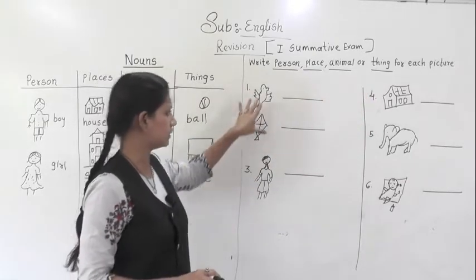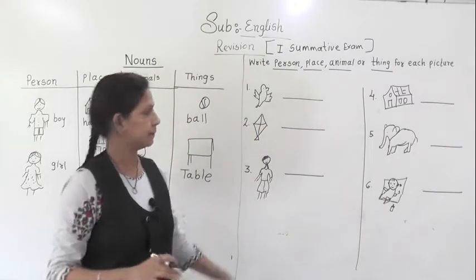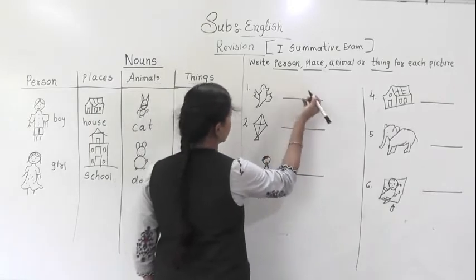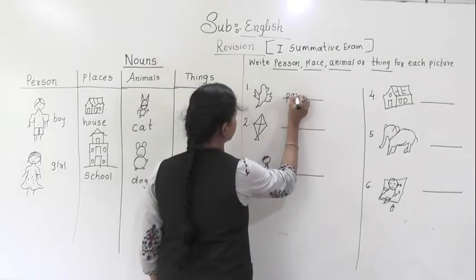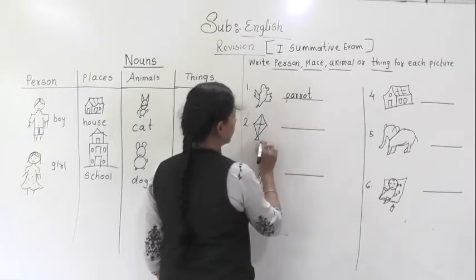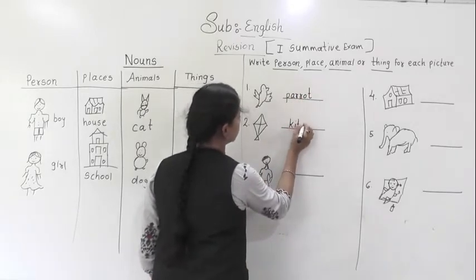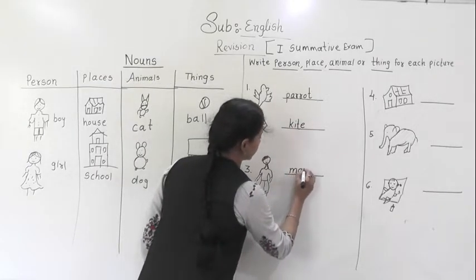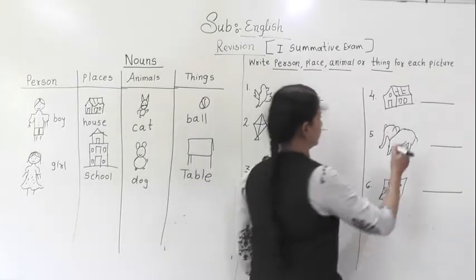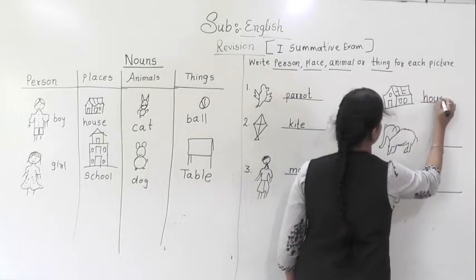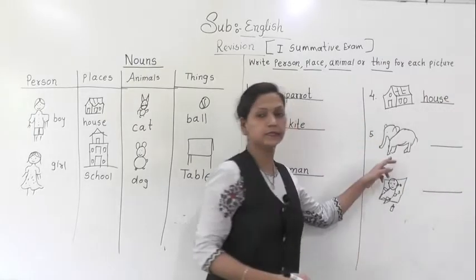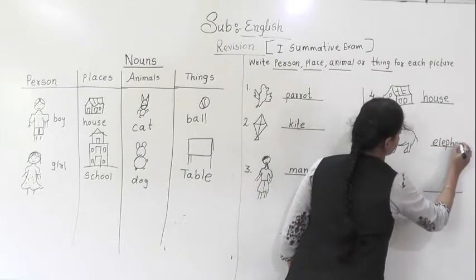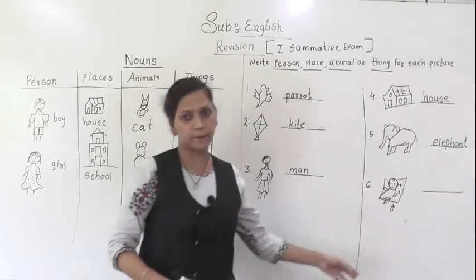You have to observe the picture and write the correct spelling. So, what is this? Yes. This is parrot or you can say a bird. I am writing here. Parrot. Then kite. This is a thing. Man. House. Then elephant.